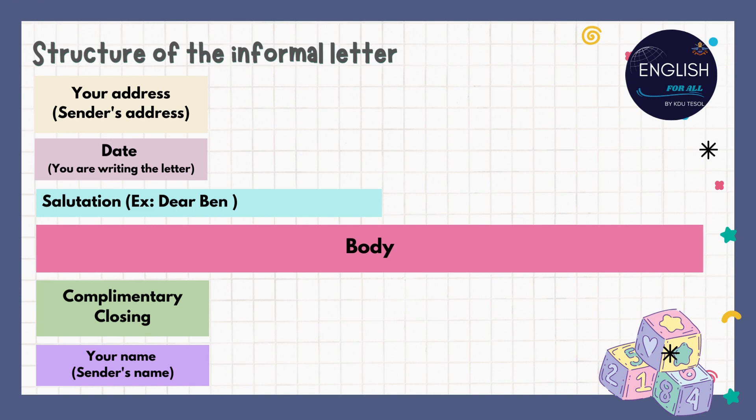Now we break down the essential components of an informal letter so you can write heartfelt messages to friends, family, and more. Let's break it down step by step. Start with your address at the top — this is where your letter will be coming from. Next, include the date you are writing the letter; it helps the reader know when it was penned.